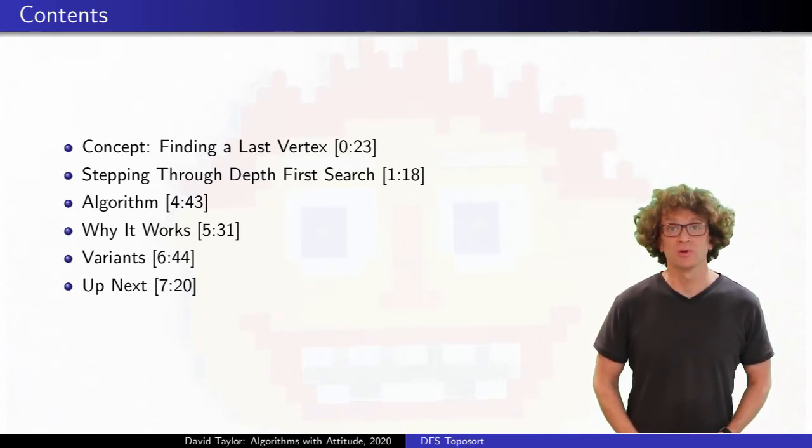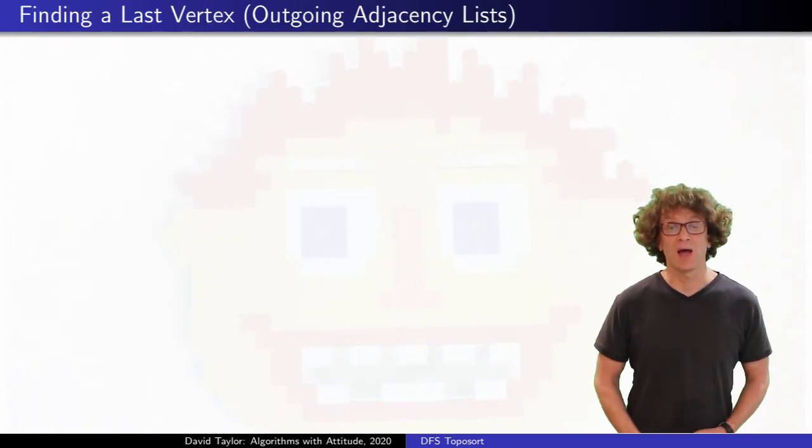For this sequence of videos, I am assuming that the graph is given to you in outgoing adjacency list format. The idea behind Kahn's algorithm was to find a vertex that can go first, and work from the beginning.